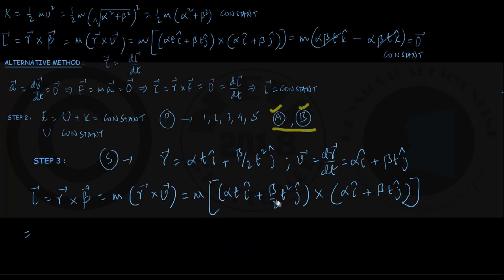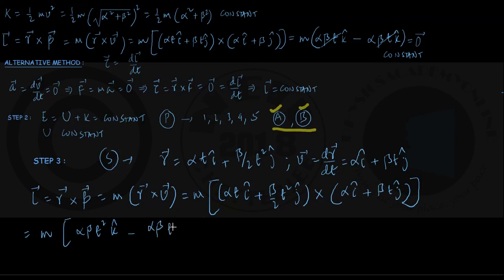Angular momentum L = m·(r cross v). With r = alpha·T·î plus (beta/2)·T²·ĵ and v = alpha·î plus beta·T·ĵ, the cross product gives: î cross î and ĵ cross ĵ are null vectors. The surviving terms are alpha·beta·T²·k̂ minus alpha·beta·T²/2·k̂, yielding L = half·m·alpha·beta·T²·k̂. This is a function of time and not a constant.